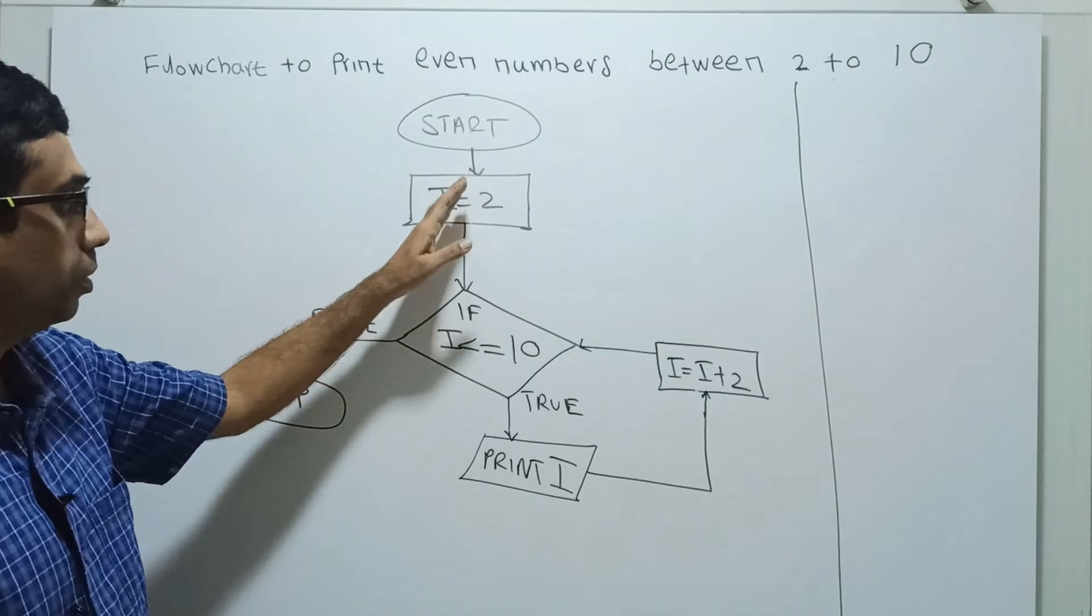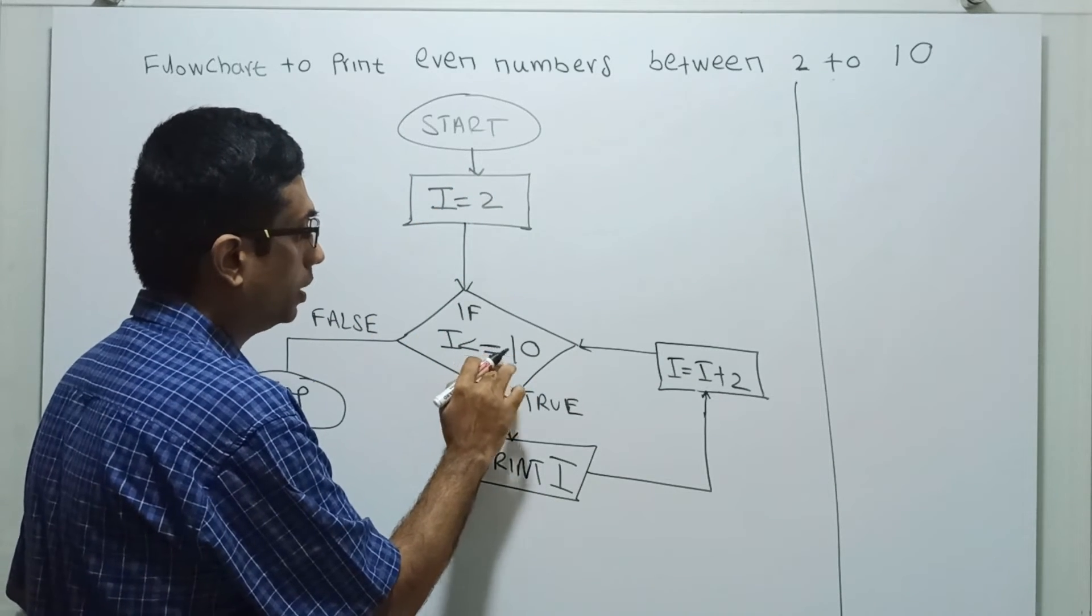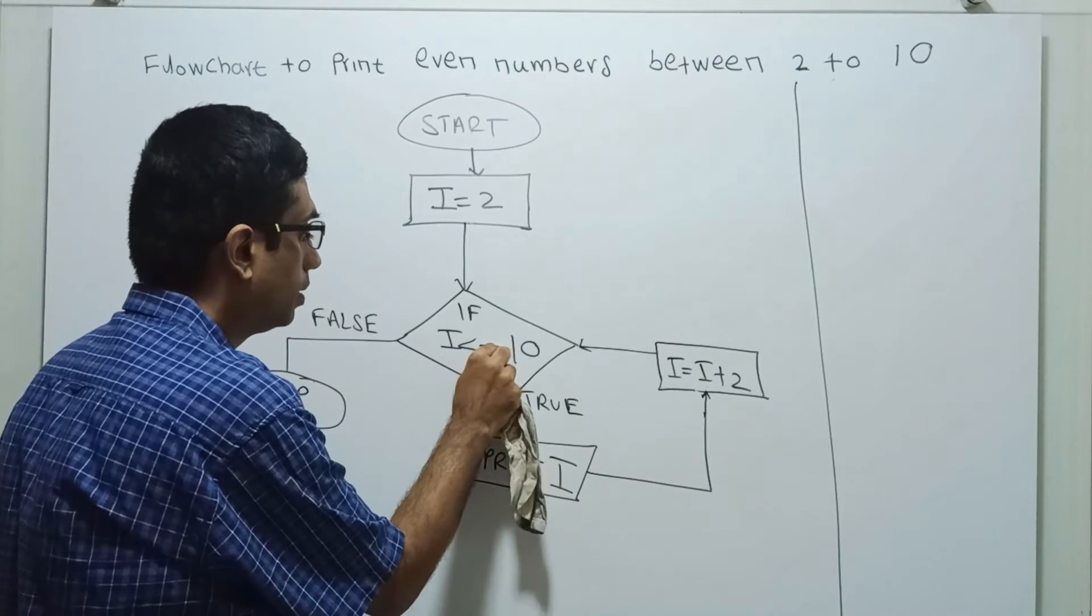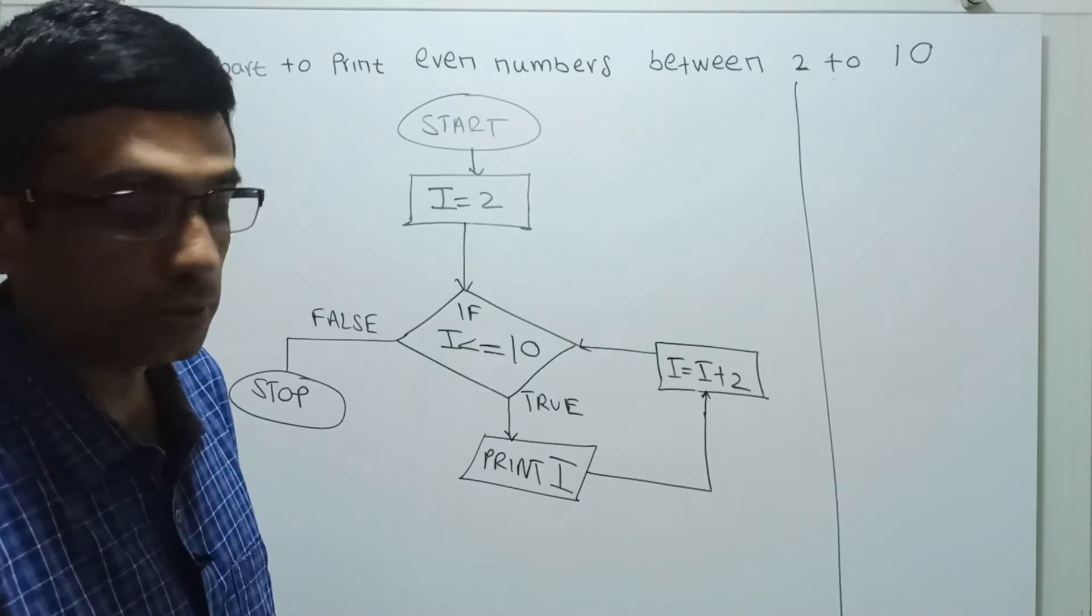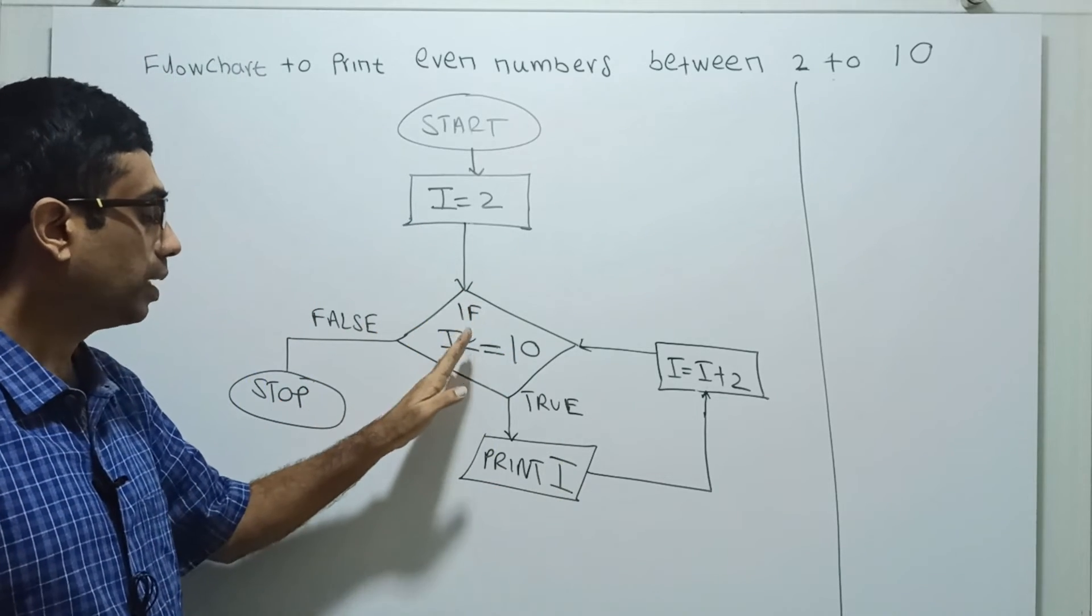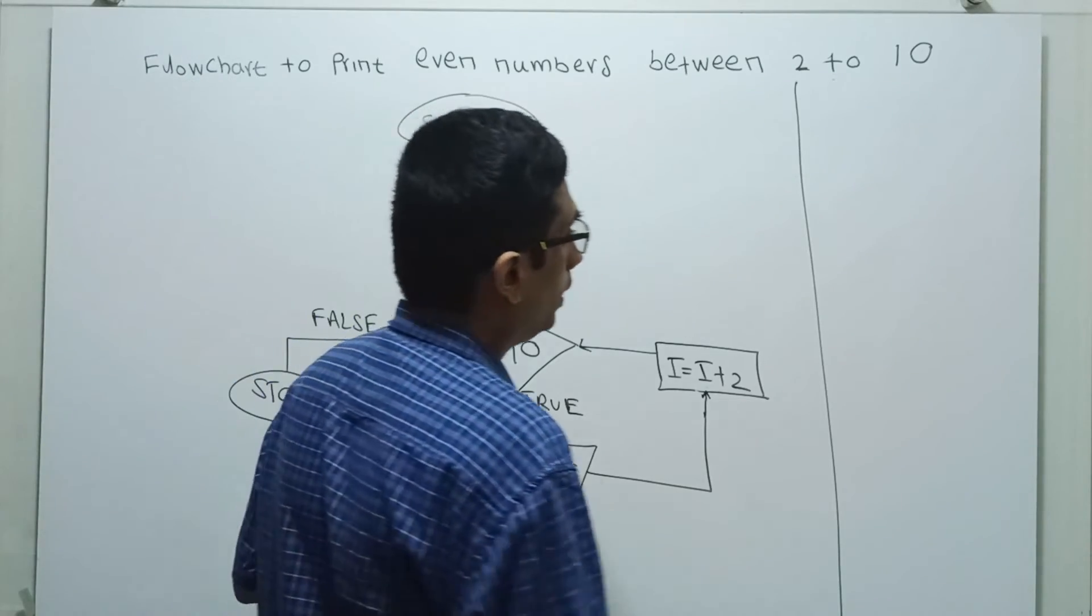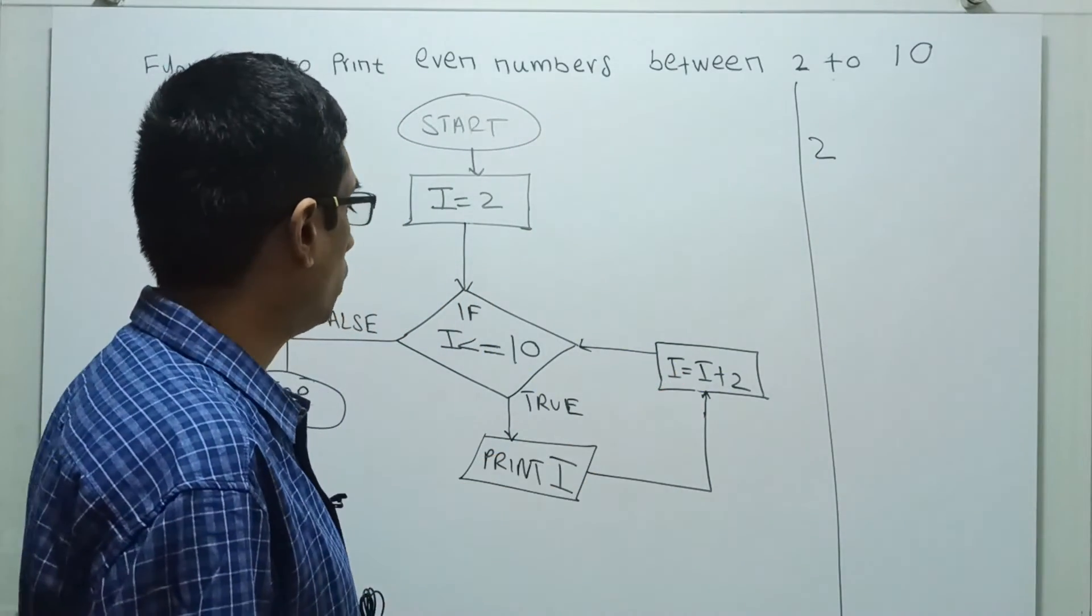Initial value of i equal to 2. If i less than or equal to 10, that means 2 less than or equal to 10. It will check. So print i, it will print 2. i equal to i plus 2, i becomes 4.